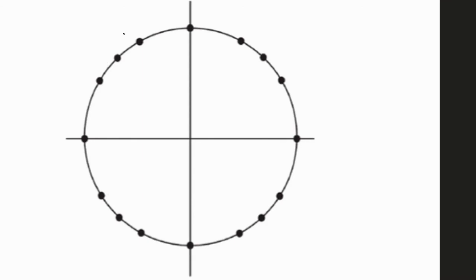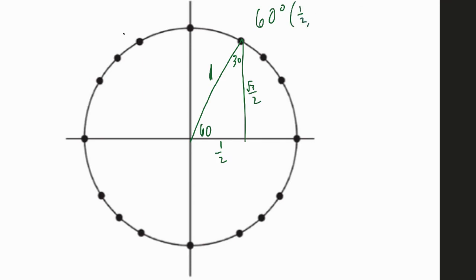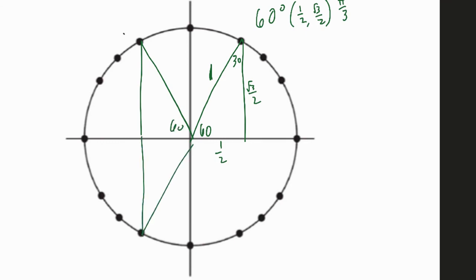For the last set, I need the 60-degree points. This is a 60-degree angle, which makes the other acute angle 30°. The hypotenuse is still 1, so this side is 1/2 and the other leg is √3/2. The ordered pair this time is (1/2, √3/2). Doing the radian conversion gives π/3. That's also a 60-degree angle — there's one down here and a fourth one as well. If we're 60 degrees short of 180°, this is 120 degrees. The radian conversion is 2π/3 and the ordered pair is (−1/2, √3/2).